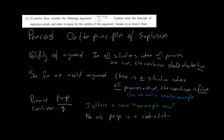Why not? Because p and not-p is a contradiction — it is impossible for this premise to be true. And as there is no counter-example, we say this argument must be valid.